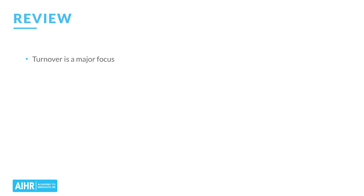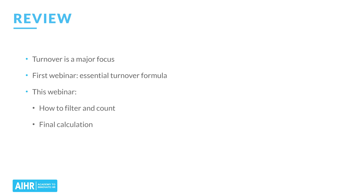As you well know, turnover has always been a huge issue in HR and a major focus of HR analytics. In the first webinar, we talked about the essential formula and what each piece meant. In today's session, we stepped you through the detailed process of filtering your data, counting the number of people at the beginning and end of the period, and actually calculating the turnover number. The major takeaway? Pay attention to the details and the order of steps needed to get the right data. It doesn't matter what tool you use — what matters is that you understand the process. The skills of data manipulation through filtering and getting the proper counts can also be directly applied to other measures, such as new hire retention or top performer turnover.